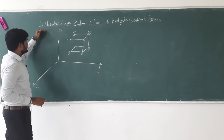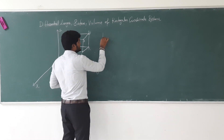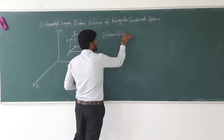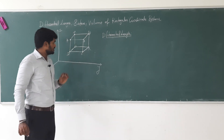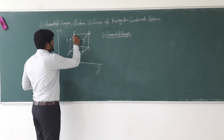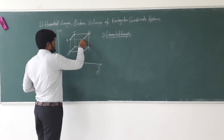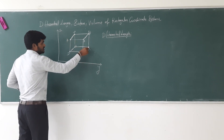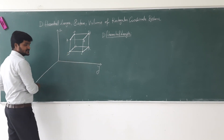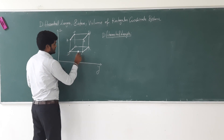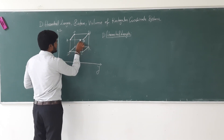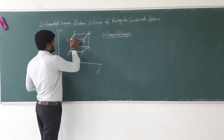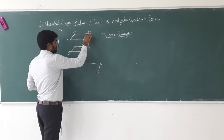First we are going to find the differential length. Some lines are along the x direction. Other lines and portions are along the y direction. Next, BC, QR, and AD are the edges along the z direction.